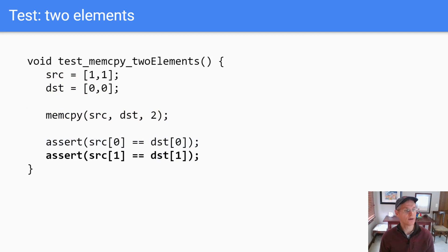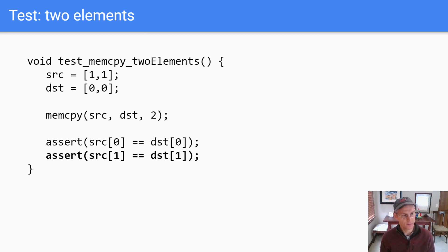Let's take a look at the copying of two elements. The only thing that's different here is that we have two elements in the array and we call mem copy with the last parameter being two. We have a second assert statement that says we already tested for the first element, so we need to test for the second one.